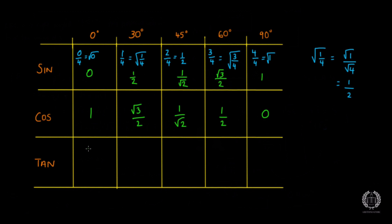Now for tan, there's an identity — tan θ equals sine θ over cos θ. You don't need to know this identity, but to get the tan values I just divide the sine value by the cos value. So for tan 0: sine is 0 and cos is 1, so 0 divided by 1 is just 0. Tan 0 is 0.